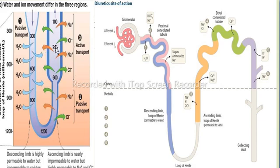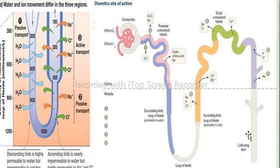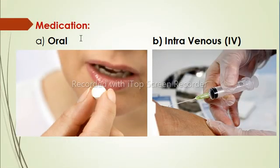When we take LASIX or furosemide, it blocks reabsorption of electrolytes and water in the loop of Henle. So they pass on to the distal convoluted tubule and then to the collecting duct, and finally we start urinating. This urine has a high content of electrolytes, and urine output is increased — that's why we call it a diuretic.